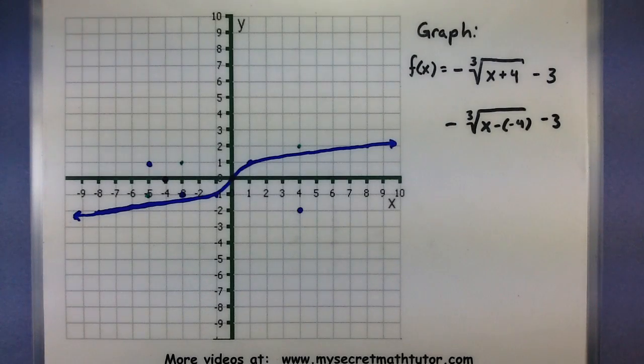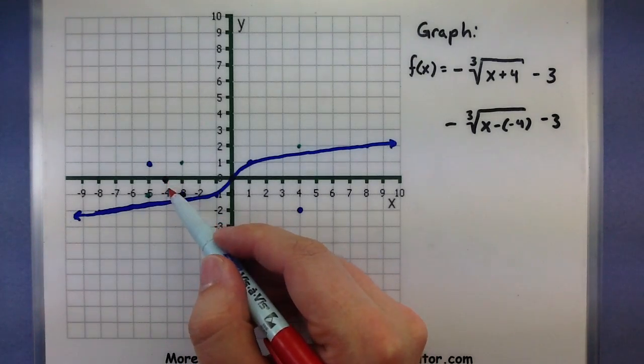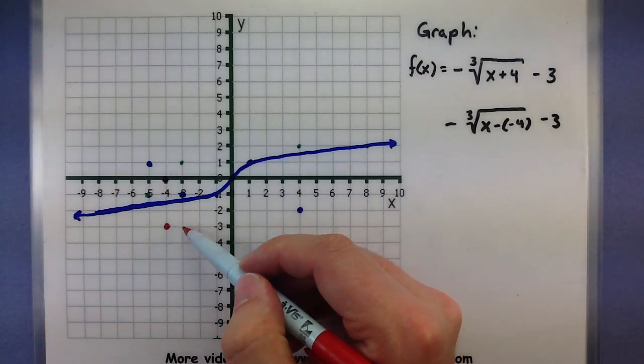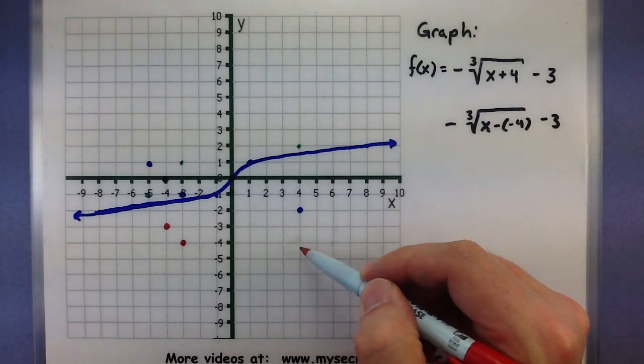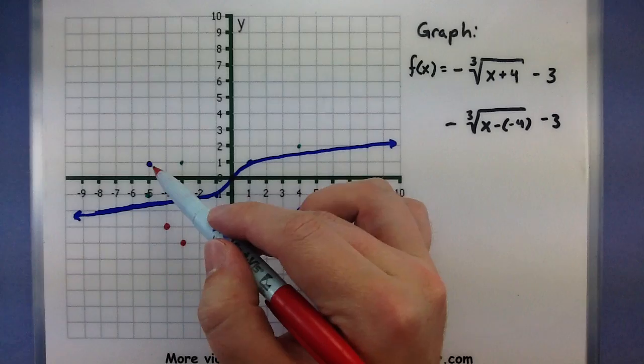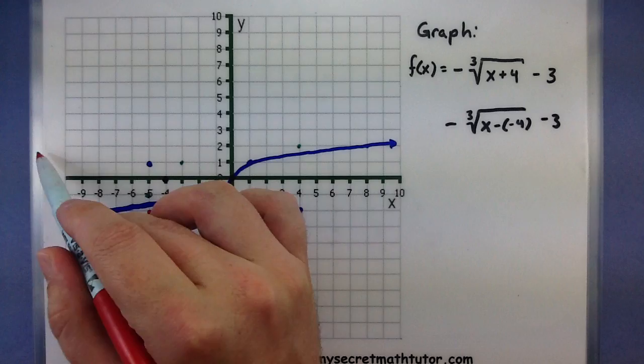We just have one more transformation to do, and that's the minus 3. So now all of our points need to go down 3. Let's again start with this center point. So here's our center point down, 1, 2, 3. Here's where it is now. Down 3, 1, 2, 3. There's our other one. Down 3, 1, 2, 3. Let's see, don't want to miss any. Here's one, 1, 2, 3.